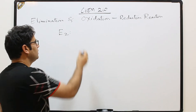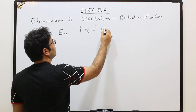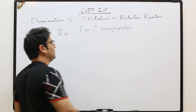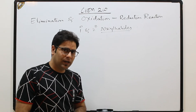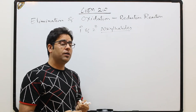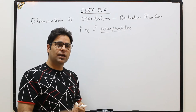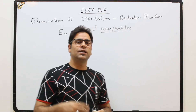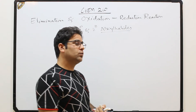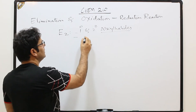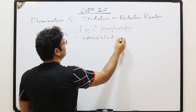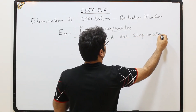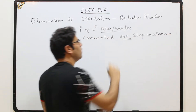In E2 we generally use primary and secondary alkyl halides. The problem with primary and secondary alkyl halides is that they form primary and secondary carbocations, which are much less stable than tertiary carbocations. That is why E2 proceeds by a concerted one-step mechanism.